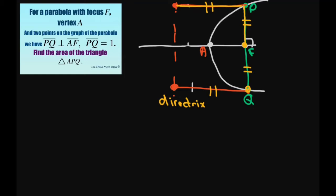And PQ is 1, so that means this is going to be 1 half and this is going to be 1 half. Also, these two lengths will be the same, because your vertex is the midpoint between the focus and the directrix.